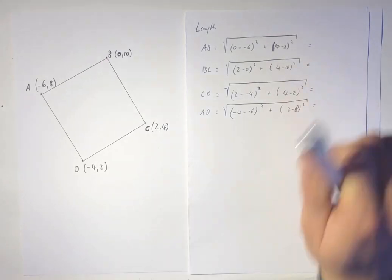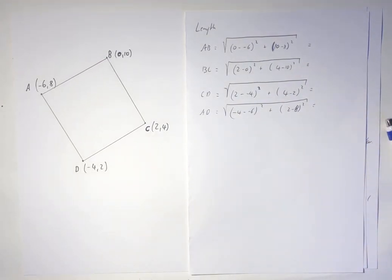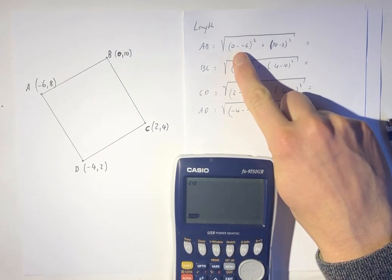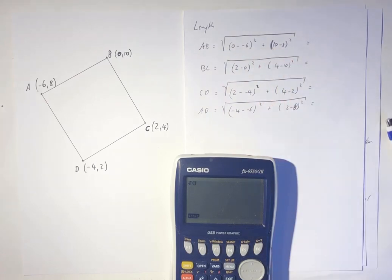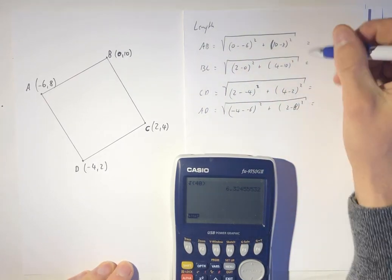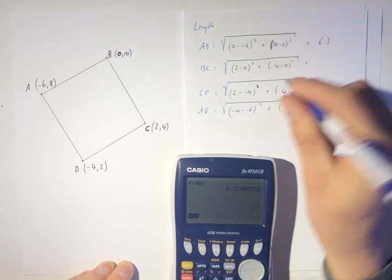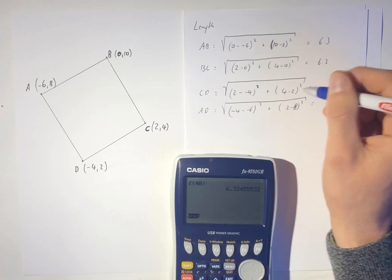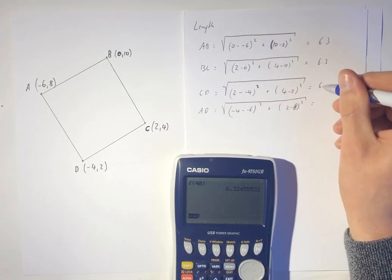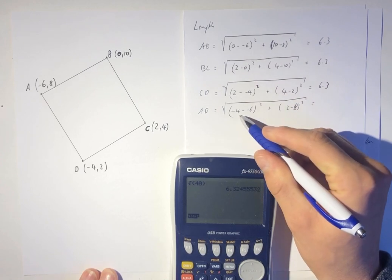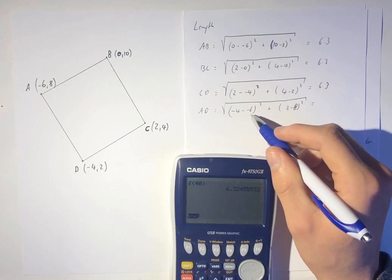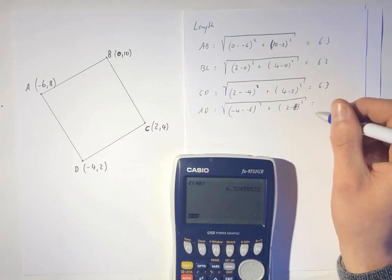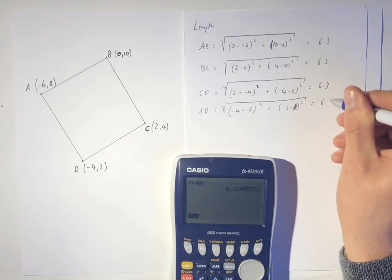And now I can put all of these straight into my calculator. So I've got the square root of, that's going to be 36 plus 4, so square root of 40, which is 6.3. And that's going to be 4 and 6 as well, so that's going to be 6.3. That's going to be 6 and 4, so that's 6.3. And this one's a little tricky, so negative four plus six, that's going to be 2, so that's going to be 4, plus that's going to be 36 because that's negative six squared, so 6.3.